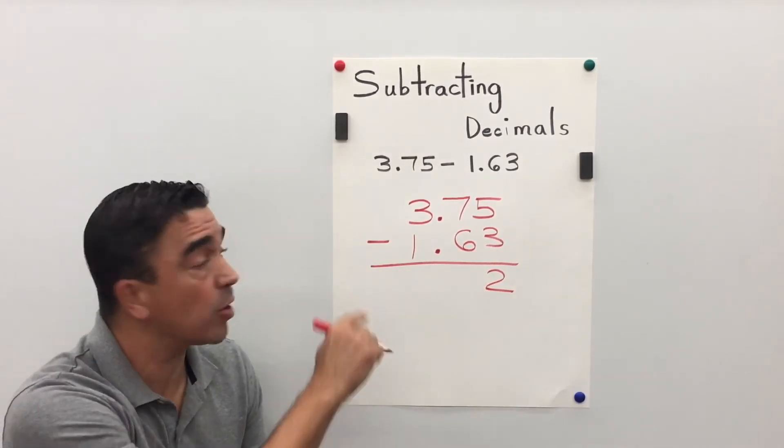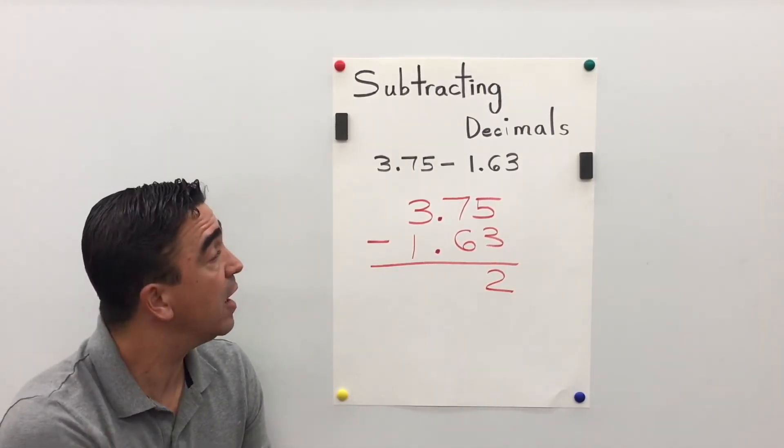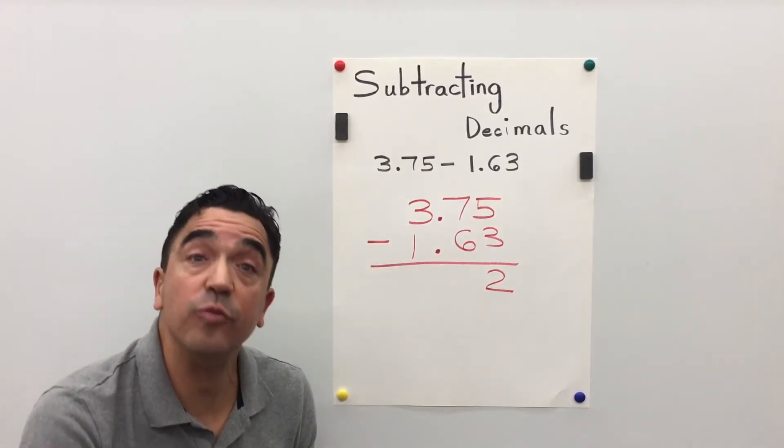Now let's go to the tenths place. 7 minus 6 is 1.